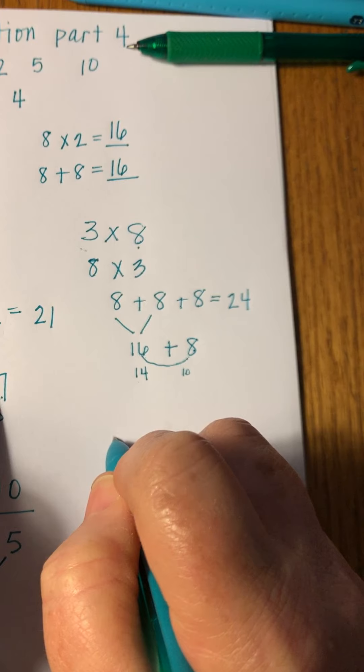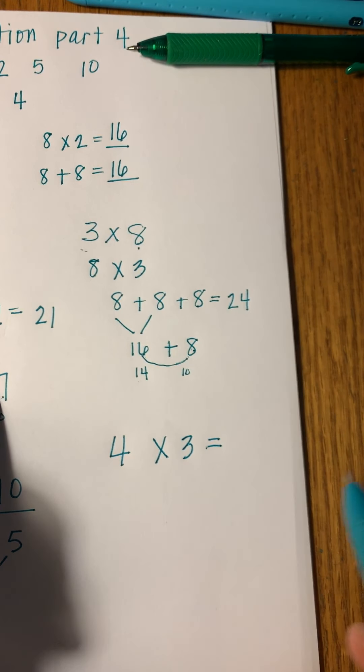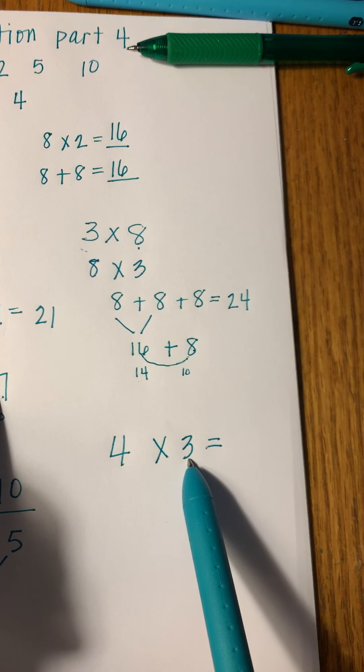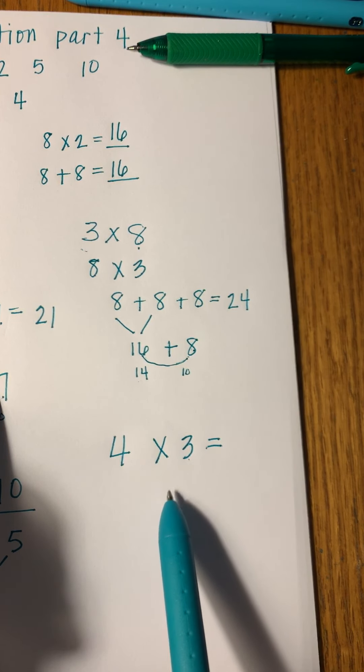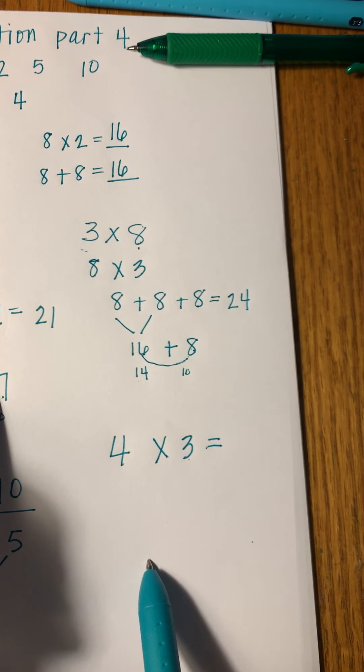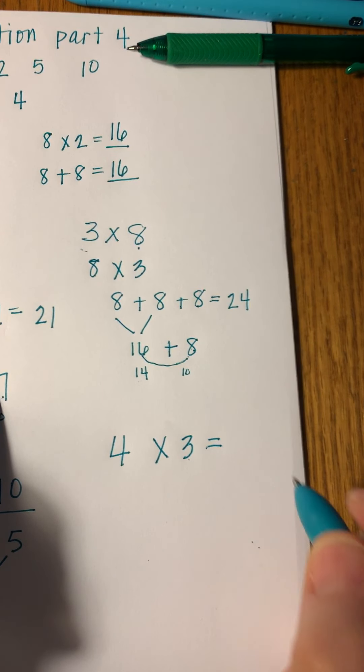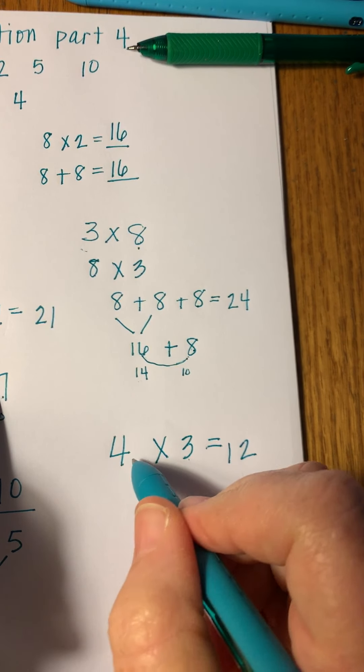All right, just picture in your head: what does this mean? 4 times 3. So two threes are 6, and two threes are 6. Bring the two sixes together - did you think 12? You would be correct. This means four groups of three.